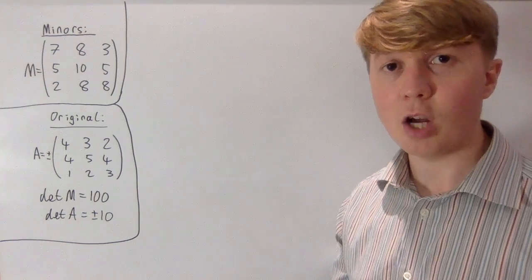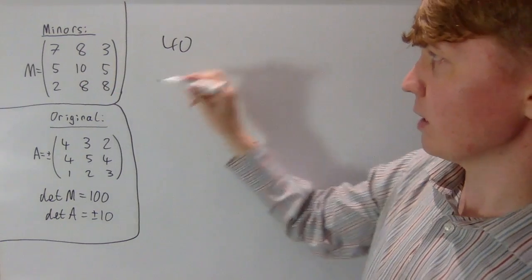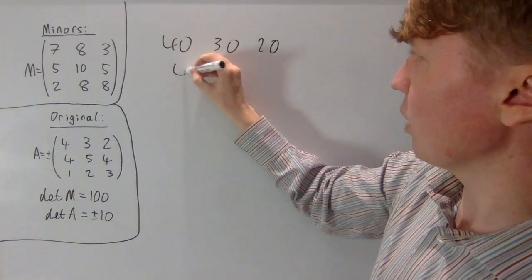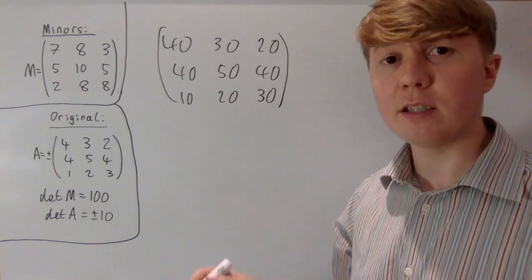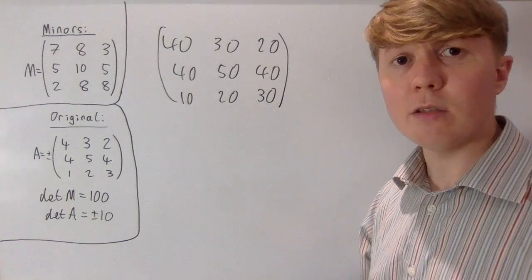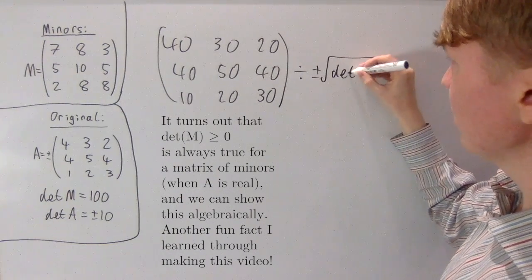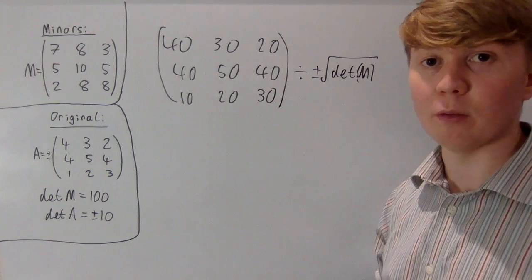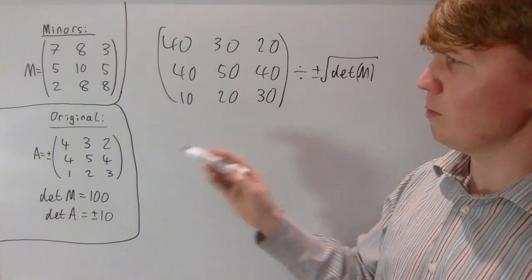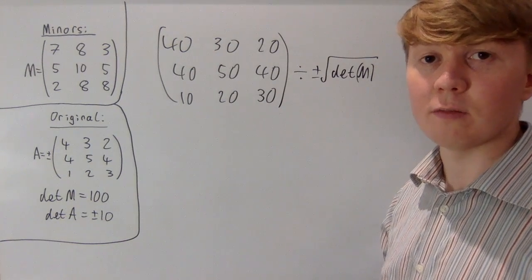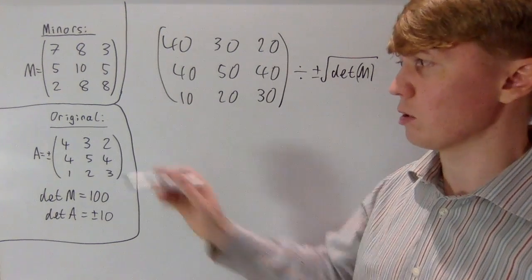It turns out we can skip quite a few steps. There's a shorter way: find the matrix of minors of the matrix of minors. Starting with our matrix of minors, the top left gives 80 minus 40 equals 40, then 40 minus 10 equals 30, 40 minus 20 equals 20, and similarly we get 40, 50, 40, 10, 20, and 30. This is our matrix of minors of the matrix of minors, and it looks a lot like our original matrix. All you need to do is divide by plus or minus the square root of the determinant of your matrix of minors — which is effectively dividing by the determinant of the original matrix — and this gets you back to your original matrix, up to the plus or minus sign. It's really cool that finding the minors of the minors gets you back to something so similar to the original matrix, and you can try proving this algebraically, as long as the original matrix is non-singular.